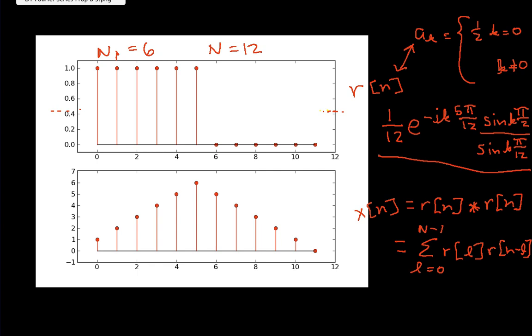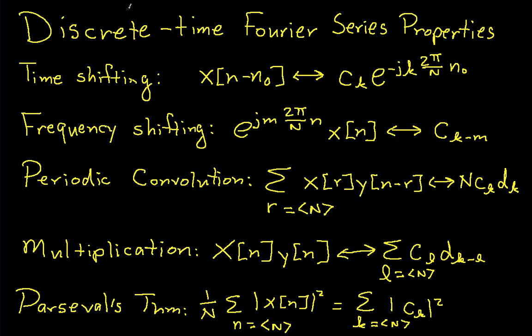We want to get the Fourier series coefficients for x of k. And to do that, we will use this discrete time Fourier series property. That is, that the periodic convolution of two functions in the time domain,